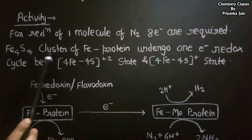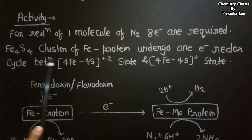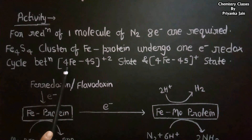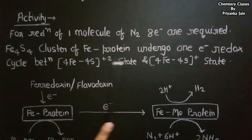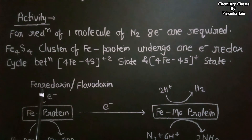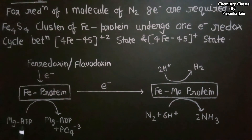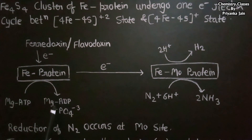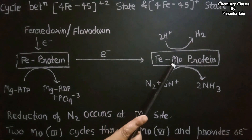The Fe4S4 cluster of the iron protein undergoes a one-electron redox cycle, cycling between two oxidation states: [Fe4S4]²⁺ and [Fe4S4]⁺, providing one electron at a time. The electrons are transferred from ferredoxin or flavodoxin to the iron protein. In this process, MgATP is converted to MgADP and phosphate. The electrons are then transferred from the iron protein to the iron-molybdenum protein.